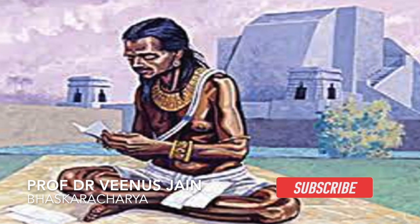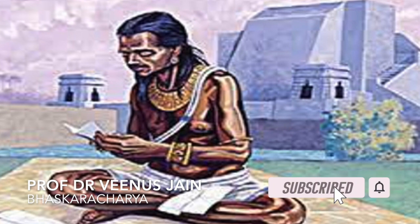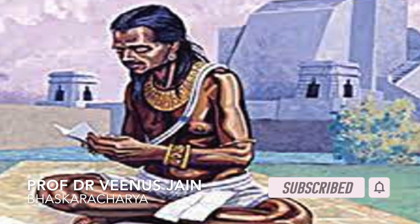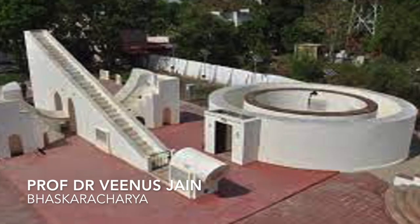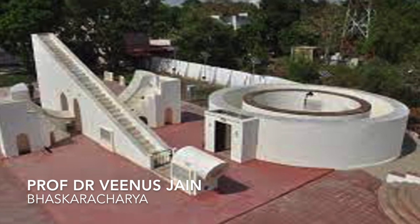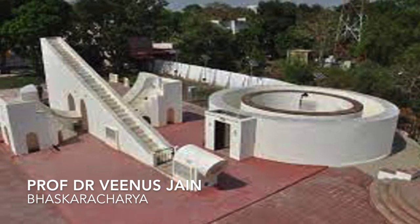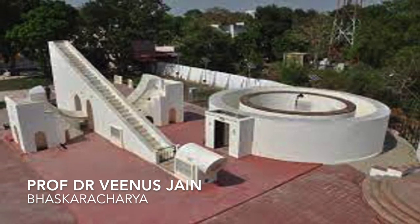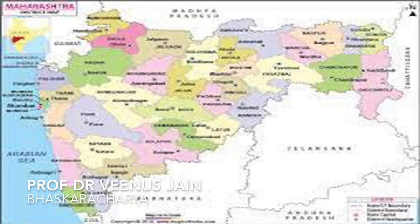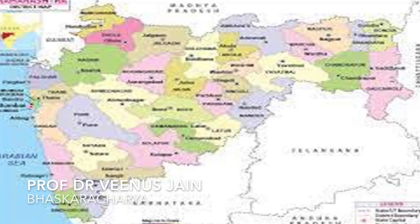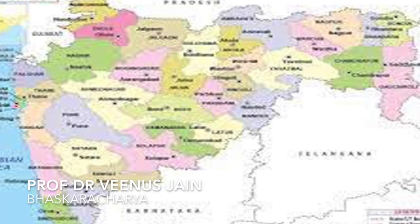He was the son of a renowned mathematician and astrologer, Maheshwar, who taught him mathematics. Bhaskar is said to have been the head of an astronomical observatory at Ujjain, the leading mathematical centre of medieval India. He lived in the Sayadri region, now in Jalgaon district of Maharashtra.